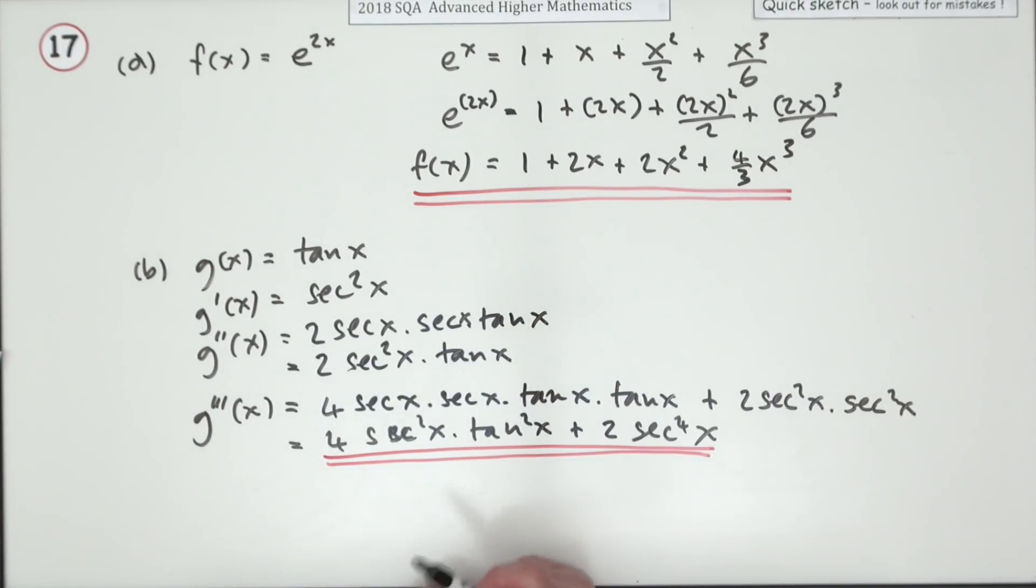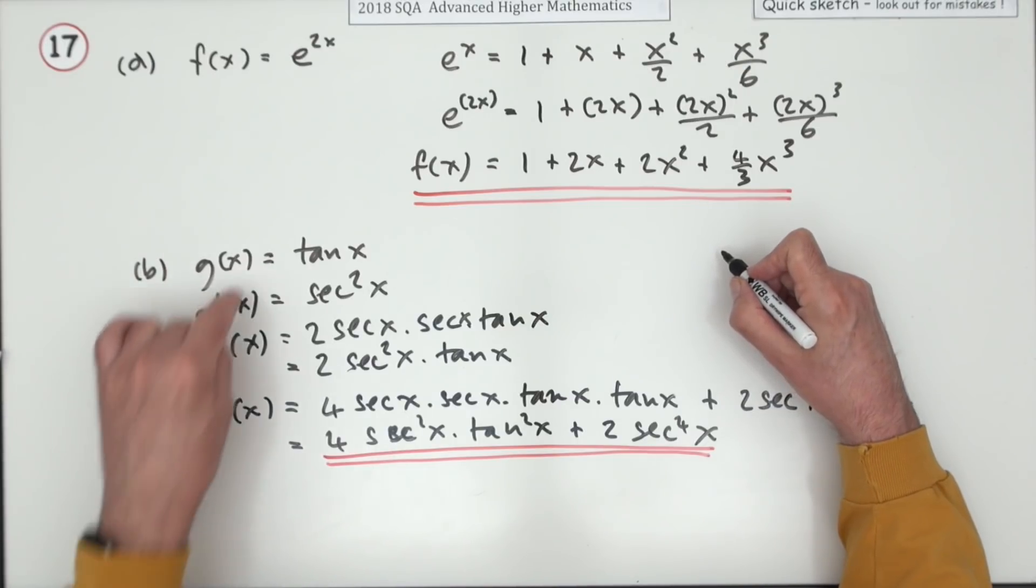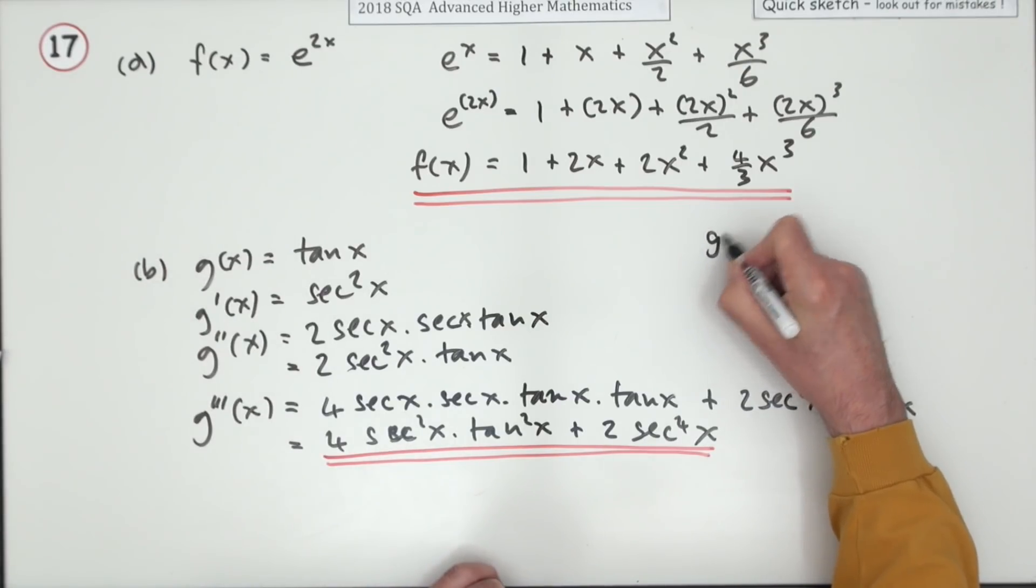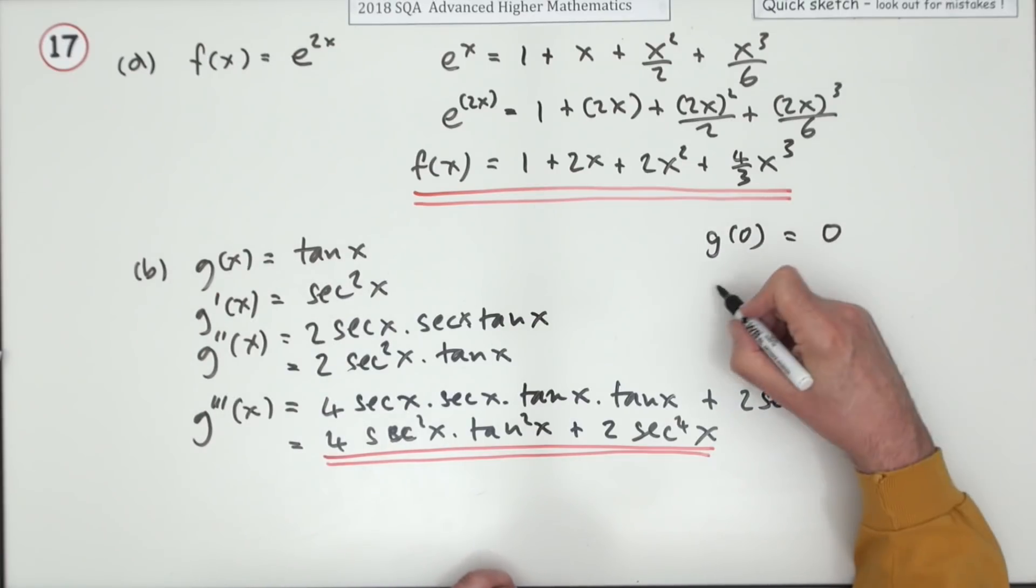Now put it into the Maclaurin expansion. Not going to have much room left. I think I'll work out these parts here because I'll need the values of these at zero. So what's g at zero? Well tan of zero is zero, so that's gone. That's one term less to worry about.